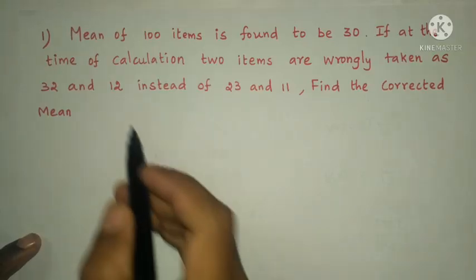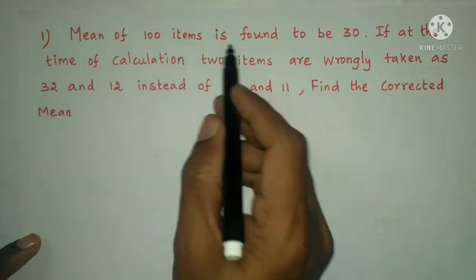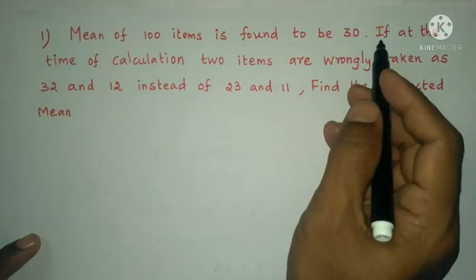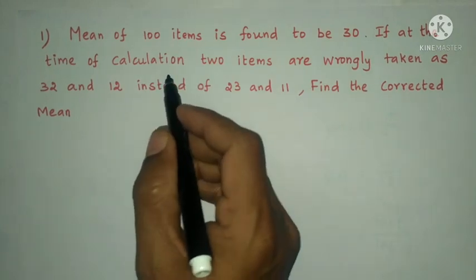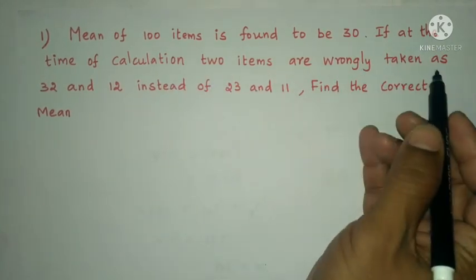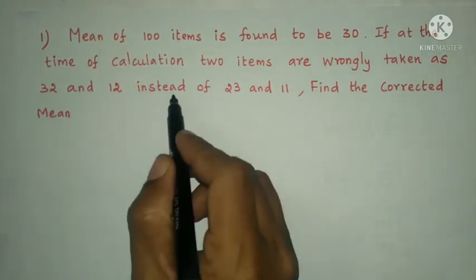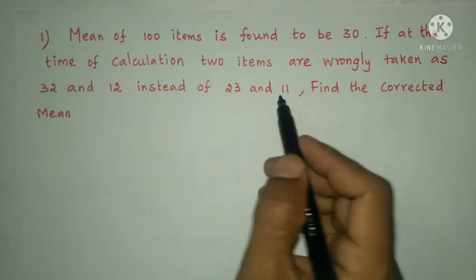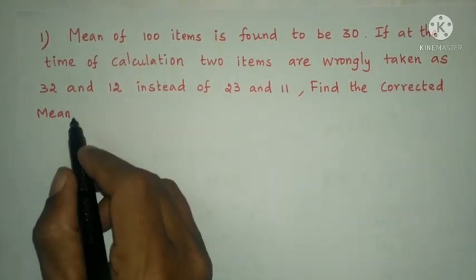First question: the mean of 100 items is found to be 30. If at the time of calculation two items are wrongly taken as 32 and 12 instead of 23 and 11, find the corrected mean.